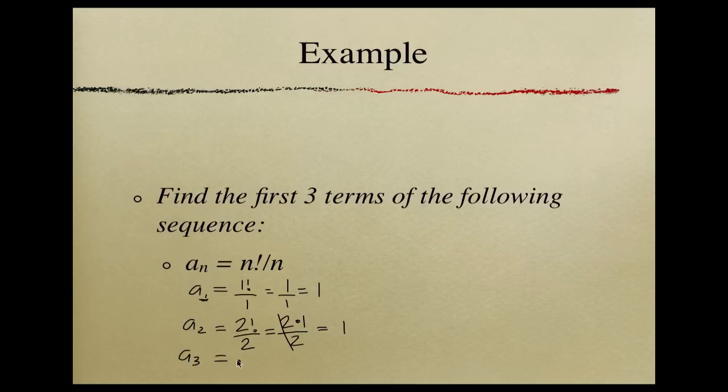3 factorial divided by 3. So this means that we have 1 times 2 times 3, divided by 3. So those terms will cancel out, and your answer is just 2 times 1, which is 2. So those are your first 3 terms of the following sequence.